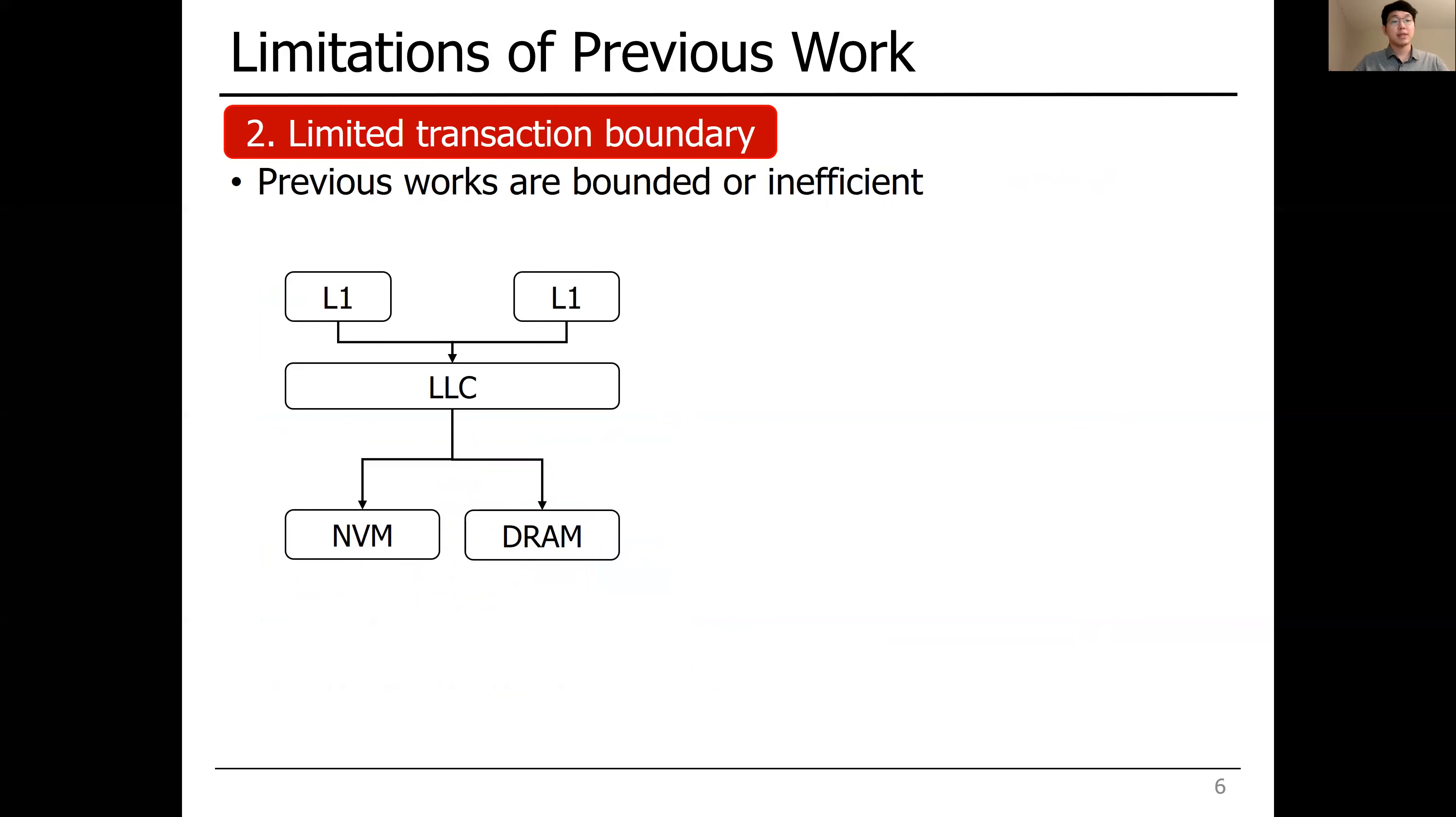The second limitation is its boundary. Commercial HTM, such as Intel's RTM, only allows speculative data to be placed in L1 cache, supporting transactions not exceeding the boundary.